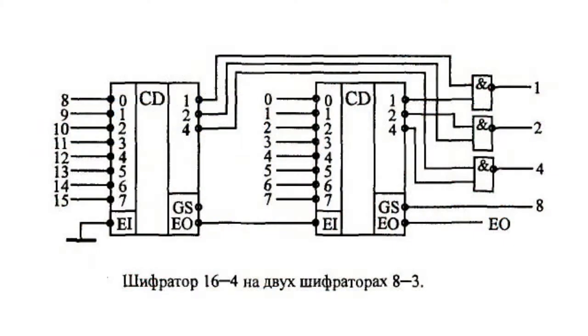In addition, the input signals shouldn't come simultaneously. The EI and EO inputs in scramblers allow increasing the number of inputs as well as the number of digits. This is done by means of additional elements at the output.